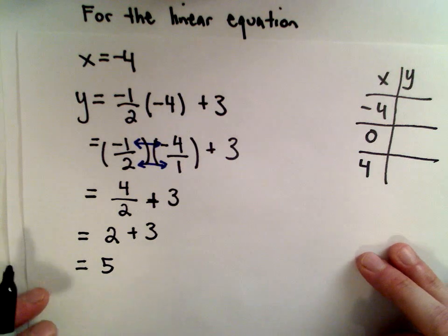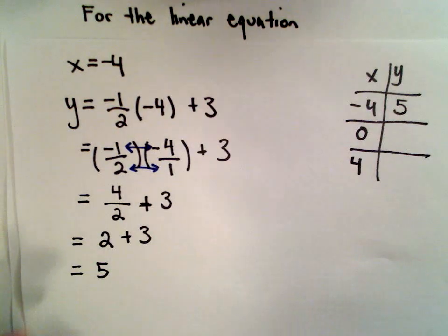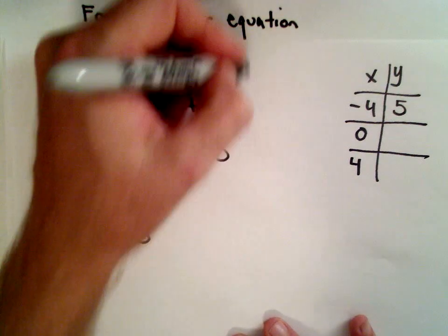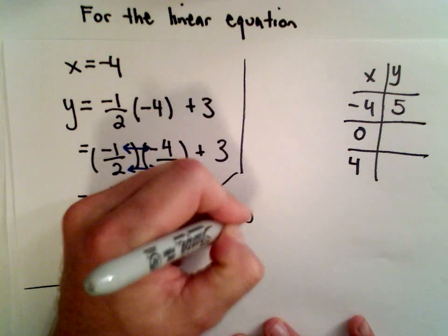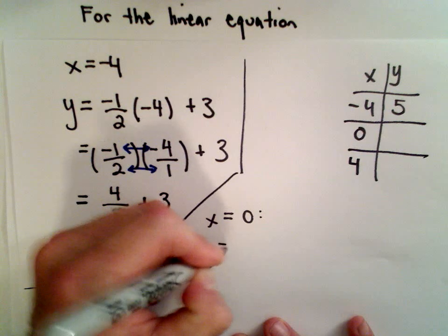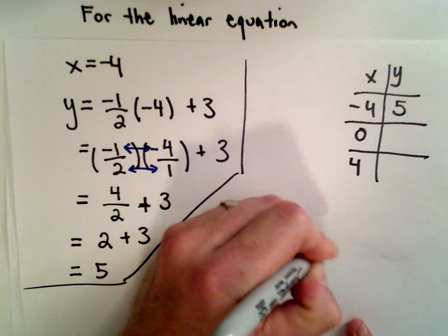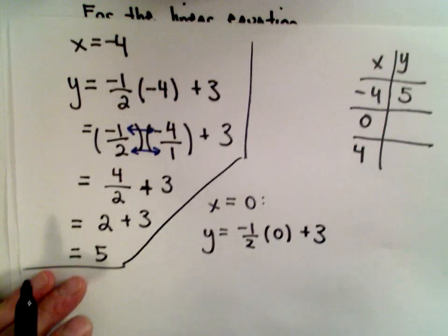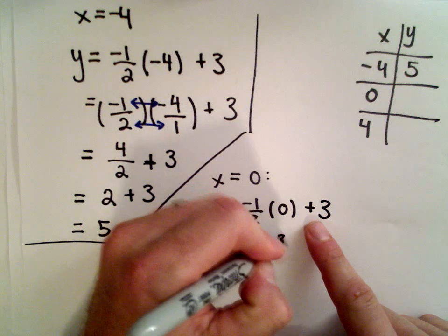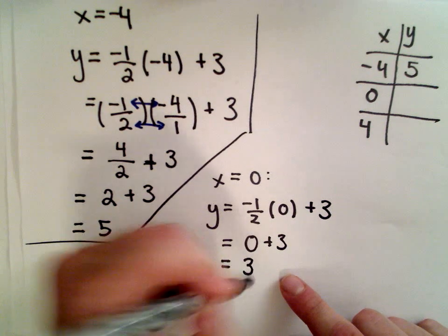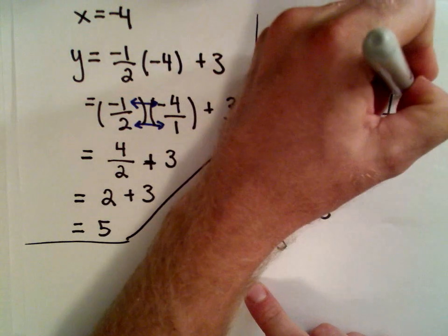So if we substitute in the value of negative 4, we get the value of positive 5. Now let's do the same thing with x equals 0. We would have y equals negative 1 half multiplied by 0 plus 3. This one's a little easier because 0 multiplied by anything is 0, and 0 plus 3 just leaves us with positive 3. So substituting in 0 gives us positive 3.